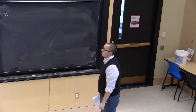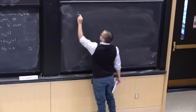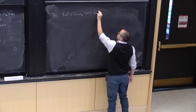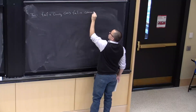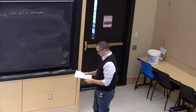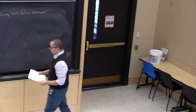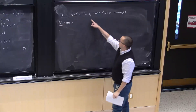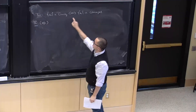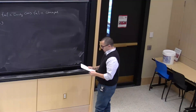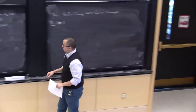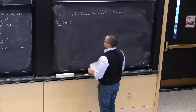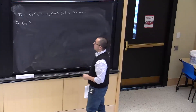Now we prove the main theorem: a sequence is convergent if and only if it is Cauchy. This is a two-way statement — we need both directions. One direction follows quickly from what we've done. If x_n is Cauchy, then x_n is bounded, which by the Bolzano-Weierstrass theorem implies x_n has a convergent subsequence, and by the theorem we just proved, a Cauchy sequence with a convergent subsequence must be convergent.